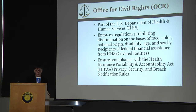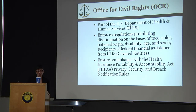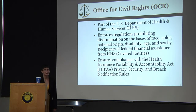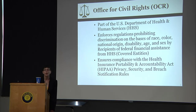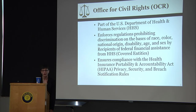Let me begin by giving a little introduction to my office. The Office for Civil Rights is part of the US Department of Health and Human Services. We enforce regulations prohibiting discrimination on the basis of race, color, national origin, disability, age, and sex by recipients of federal financial assistance from HHS. Throughout this presentation I will be referring to covered entities, which are recipients of federal financial assistance from HHS.